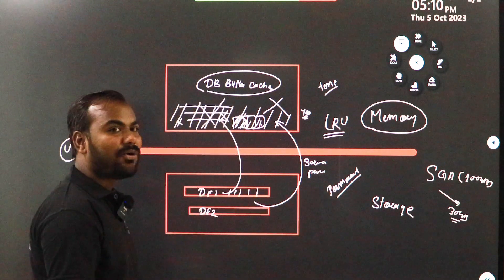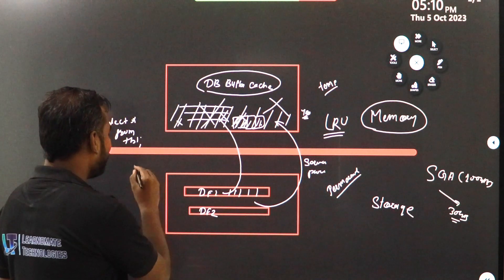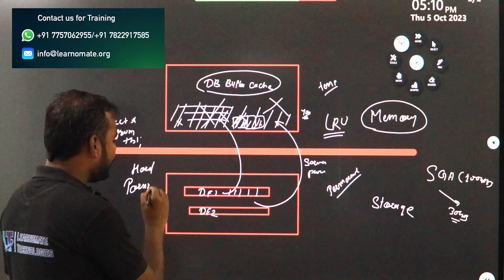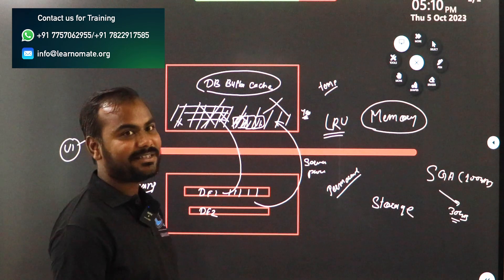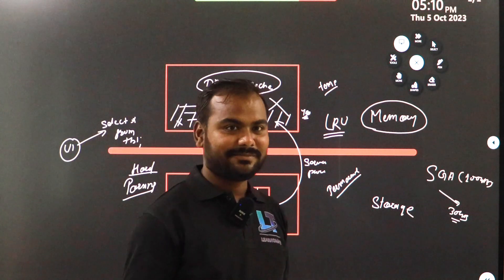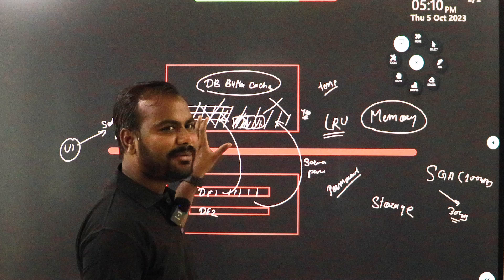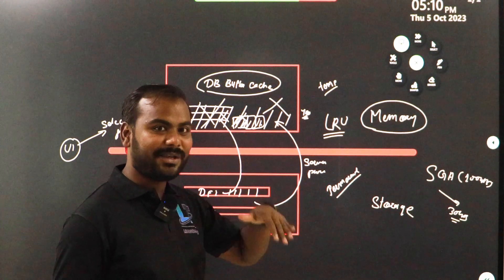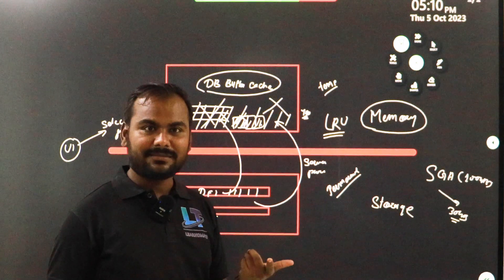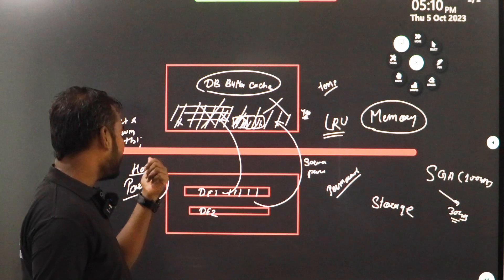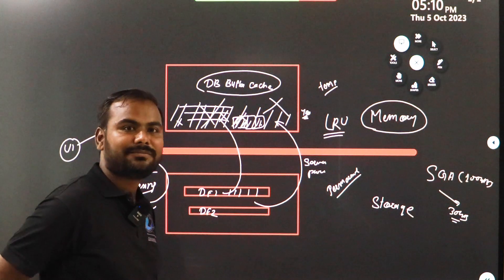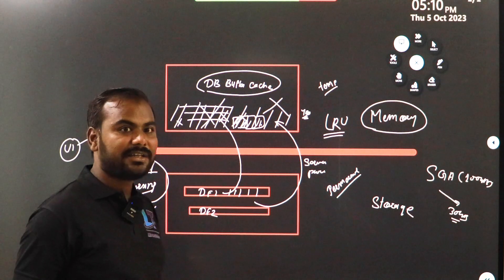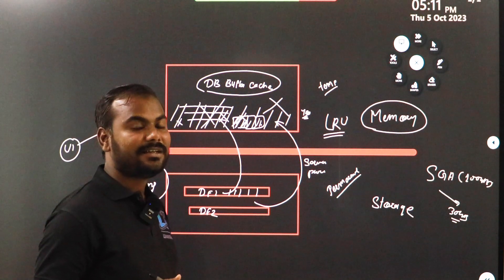This process is called hard parsing. There are two types of parsing: hard parsing and soft parsing. If the data is already available in the buffer cache and the execution plan is also available, then it is soft parsing. Hard parsing makes your database performance go down. That is the reason — do not clean the database buffer cache unless and until it is required.